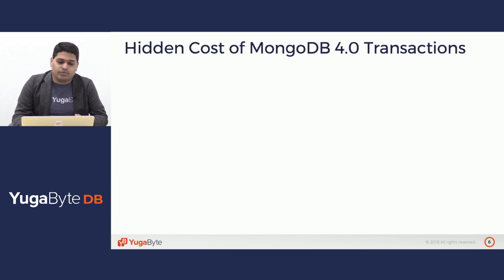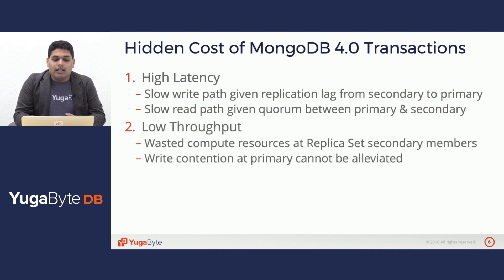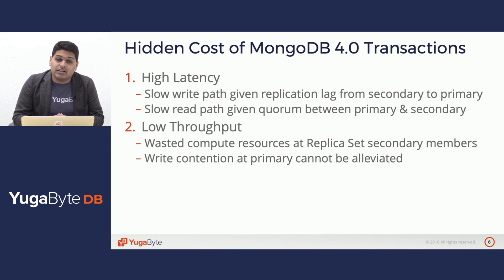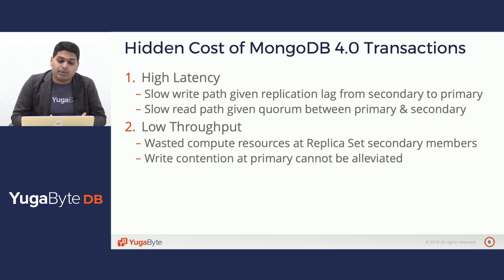So what are the hidden costs of MongoDB 4.0 transactions? First is the high latency problem that slows down both the write path and the read path. Secondly, it's about low throughput, especially if you want to continue to use transactions in a single replica set model. In a single replica set, your primary is the one involved in all kinds of writes — both transactional and non-transactional — and the secondaries are just standing there, wasting compute resources and not able to help with the write contention that may be arising at the primary.